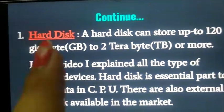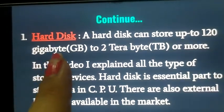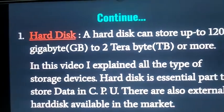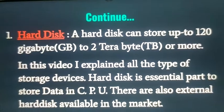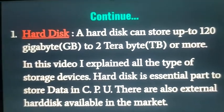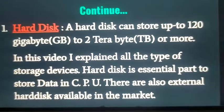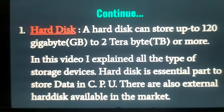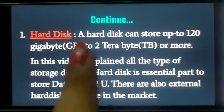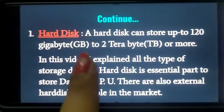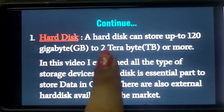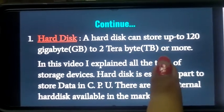First of all, hard disk. Hard disks are of two types. First, the hard disk which is already stored inside your CPU box. Second is the external hard disk which you can connect through a USB cable. A hard disk can store up to 120GB to 2TB of data.